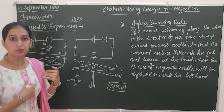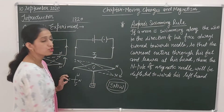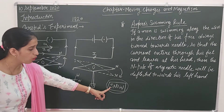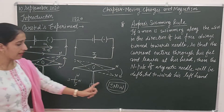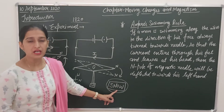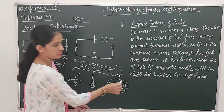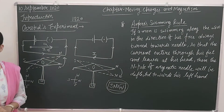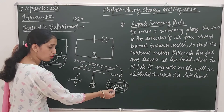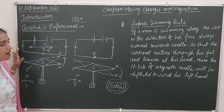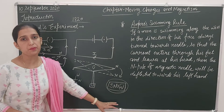The direction of current was explained by the direction of swimming of the person. This rule can also be learnt by the keyword SNOW. When the current is flowing from South to North in a wire which is over a magnetic needle, then the needle's north pole deflects towards the West. So you can learn this direction concept by the keyword SNOW — current flows South to North, and the needle deflects towards the West. This is given by Ampere's Swimming Rule.